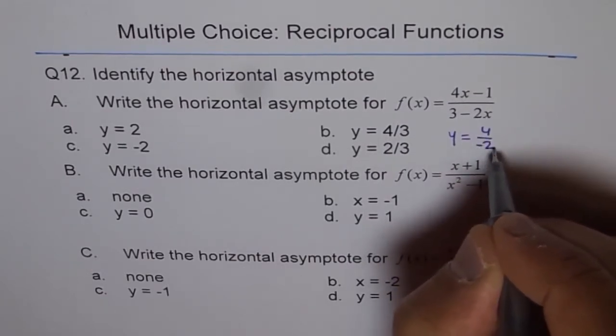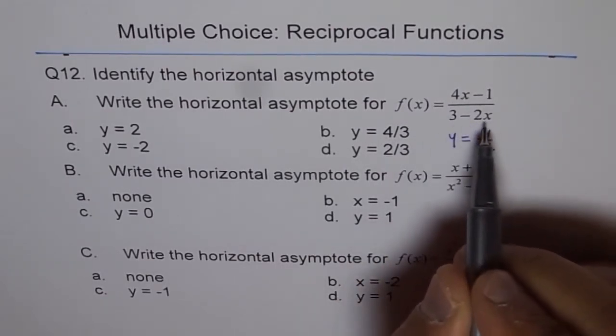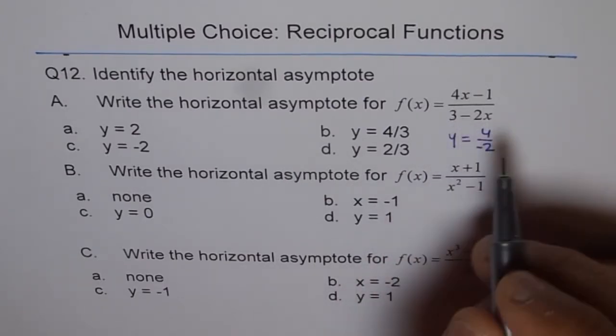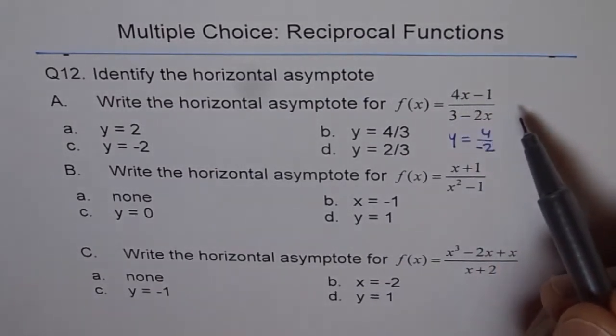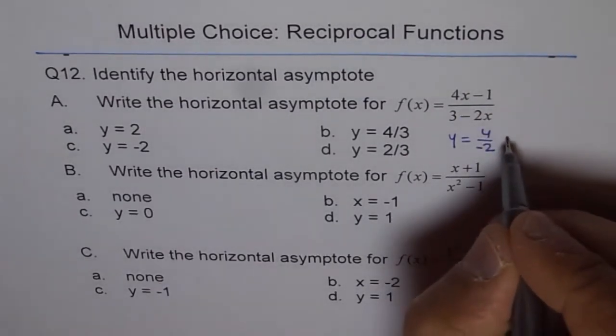The value is y equals leading coefficient here is 4 and leading coefficient here is minus 2. Remember I switched the places. I'm not writing minus 2x or 2x in the beginning, don't write 3. So leading coefficients are 4 in the numerator, minus 2 in the denominator.